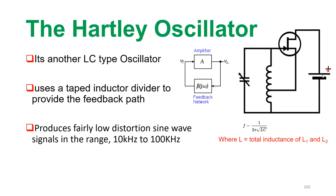As soon as you switch on the power supply, since there is no external input — as you can see in the block diagram and circuit diagram, except the DC power supply — the oscillator produces and converts the DC source energy into an alternating sinusoidal waveform.